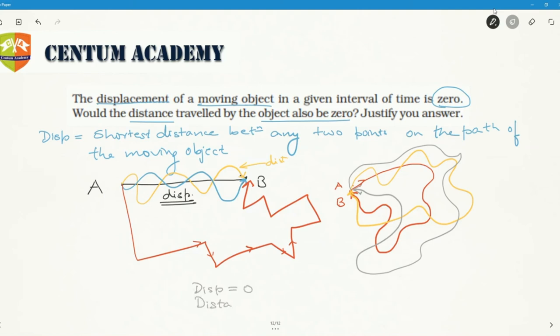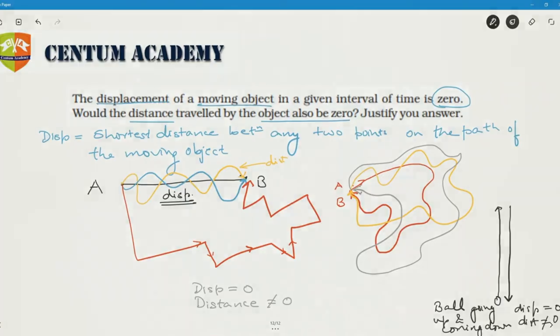Another example could be when you throw a ball up towards the sky. You throw the ball up, the ball goes up and stops momentarily at the highest point, then starts falling down and comes back to the original position. In this case, ball going up and coming down, displacement is zero but distance is not equal to zero. You could give this example to justify your answer.